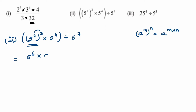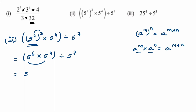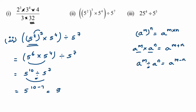The inner bracket is done. Now solve the outer bracket: bases are the same, doing multiplication, so add the powers — 6 plus 4 is 10 — giving 5 to the power 10 divided by 5 to the power 7. Now apply the division law: same base, subtract the powers. So 5 to the power 10 minus 7 equals 5 to the power 3. That's the answer for question 2.